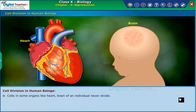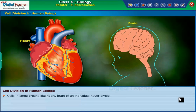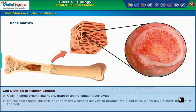Cells in some organs like the heart and brain of an individual never divide. On the other hand, the cells of bone marrow divide actively to produce red blood cells, which have a short lifespan in the body.